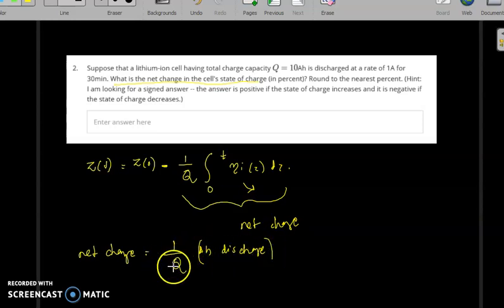Ampere-hours discharged divided by the charge capacity of the cell will give the net change. Now look at the question - the cell is discharged at a rate of 1 ampere for 30 minutes.